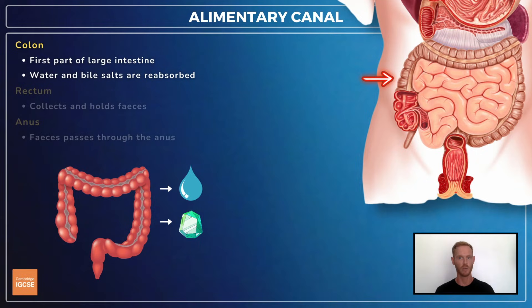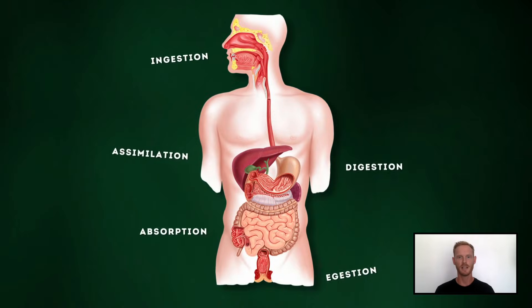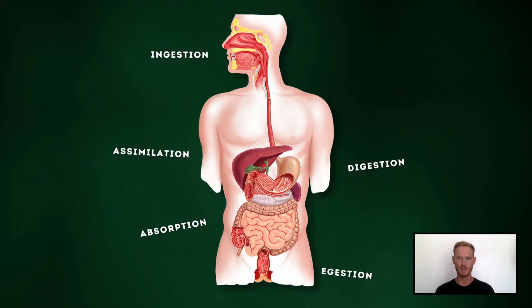From the ileum, food moves into the colon, in which water from undigested food and bile salts are reabsorbed. The bile salts are transported back to the liver and reused. At this point, the mass of food has been reduced to feces, a semi-solid mass of undigested dietary fibre, mucus and dead cells from the lining of the alimentary canal. This is stored in the rectum before passing out of the body via the anus.